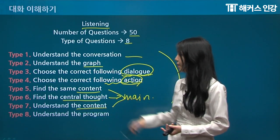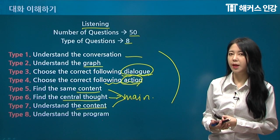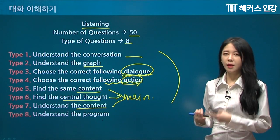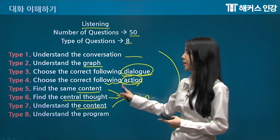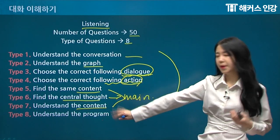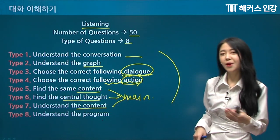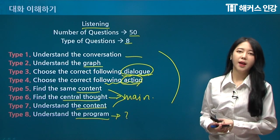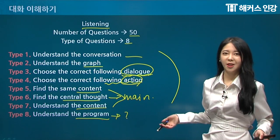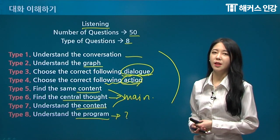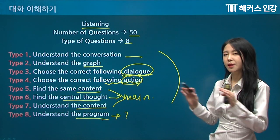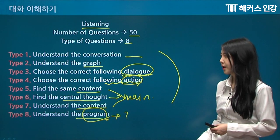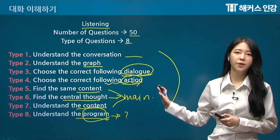Next is type seven: understand the content. These two are a little bit similar, and there's a similar one in reading too, but the difference is in levels and how they give you the passage — so the topics, level, and format will be a little bit different. Type seven asks whether you understand the content well. Last is type eight: understand the program — what kind of program it is. They could give you anything related to a lecture or a conversation in a specific setting with different topics, but it's going to be informative, making it a big and very difficult problem. Those are the eight types for this listening test.